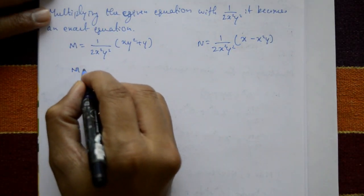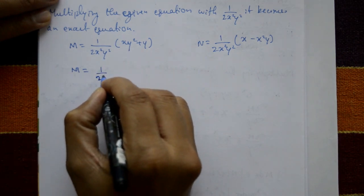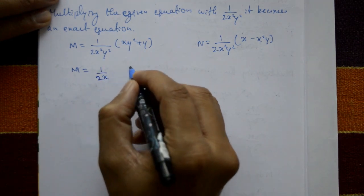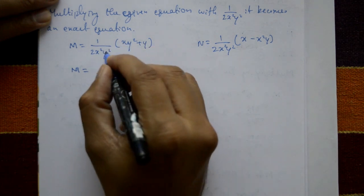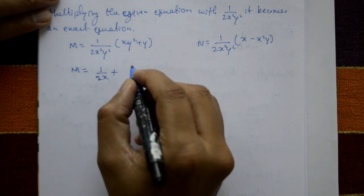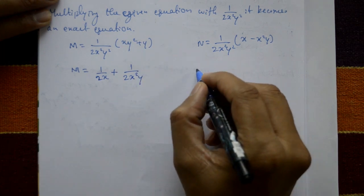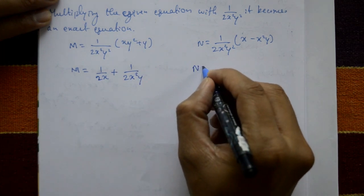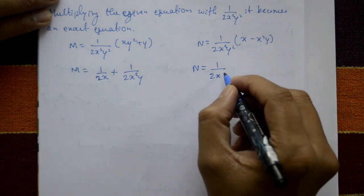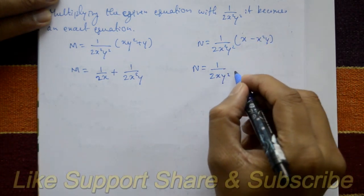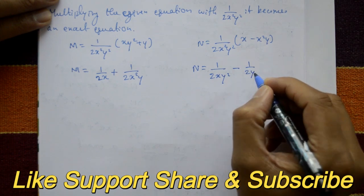After multiplying, M equals 1/(2x) plus 1/(2x²y) (cancelling y² with y, and x cancels). And N equals 1/(2x·y²) minus 1/(2y).